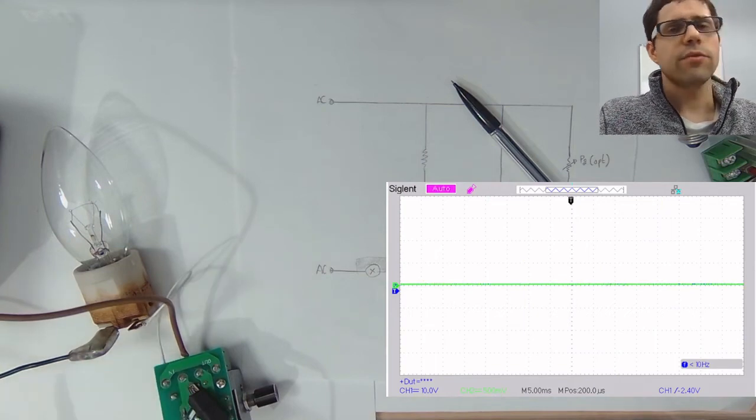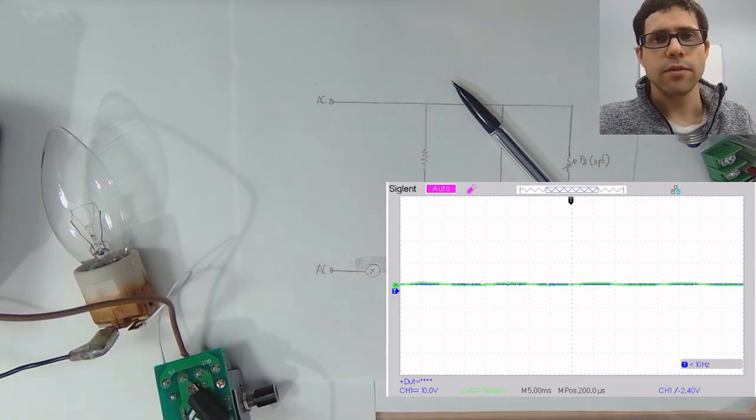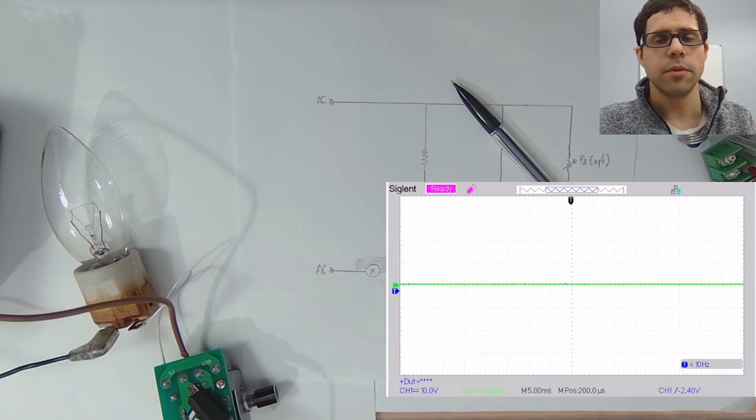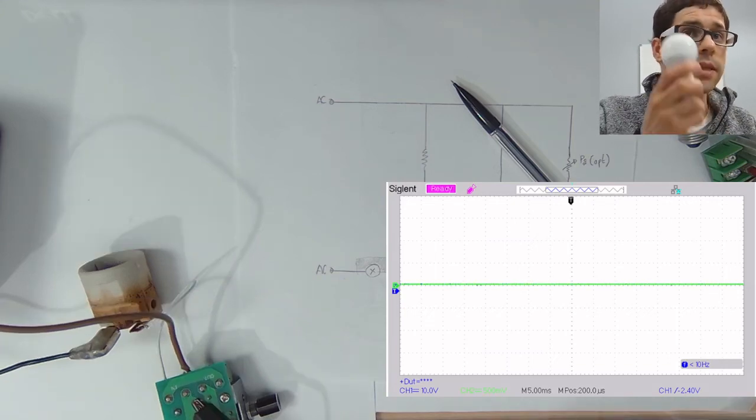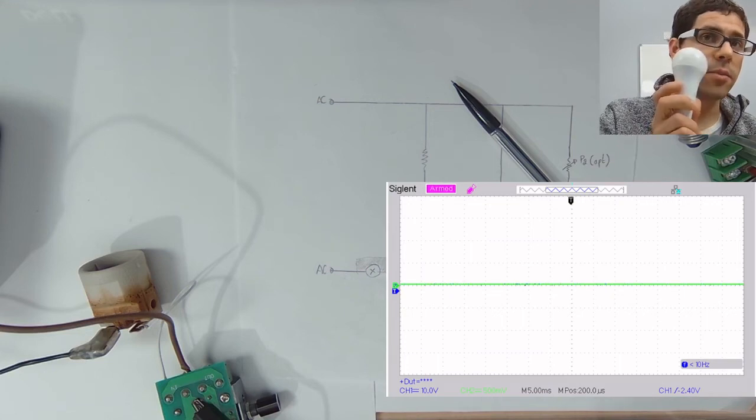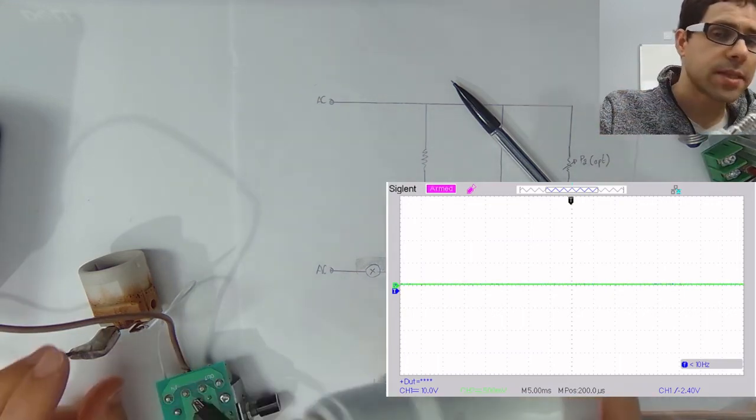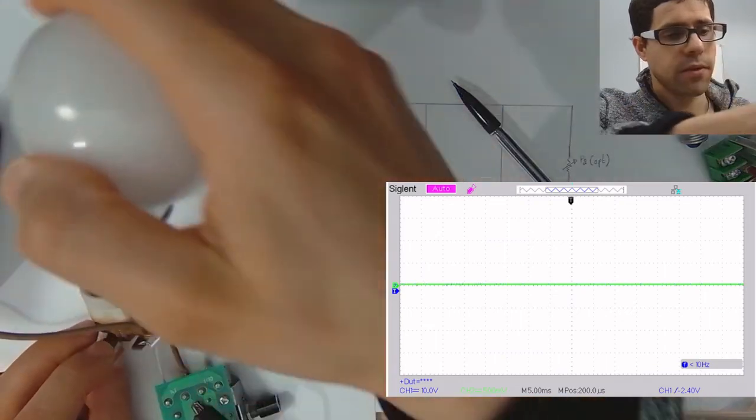Now why are triac dimmers not supposed to be used with LED bulbs and why do they make them flicker? Let's find out. Let's see what happens if we try an LED bulb replacing the halogen bulb and see how the waveforms are going to be different.